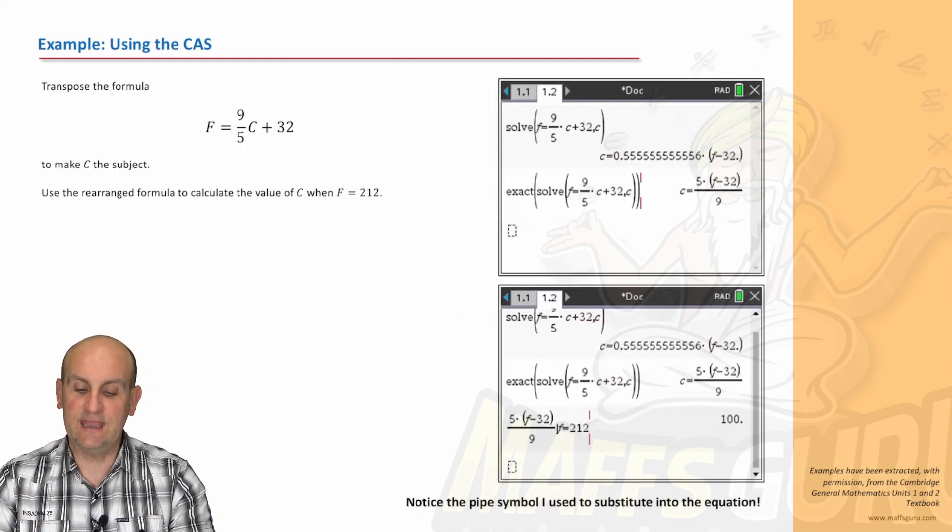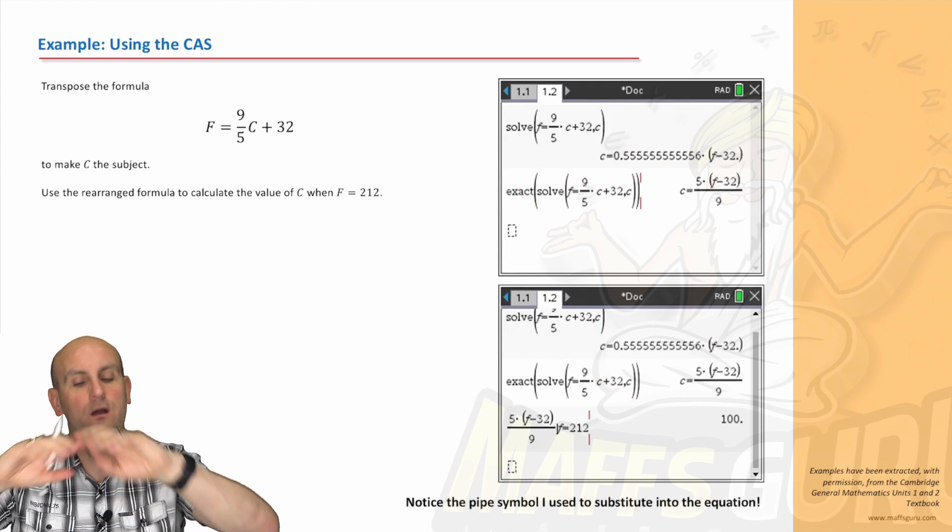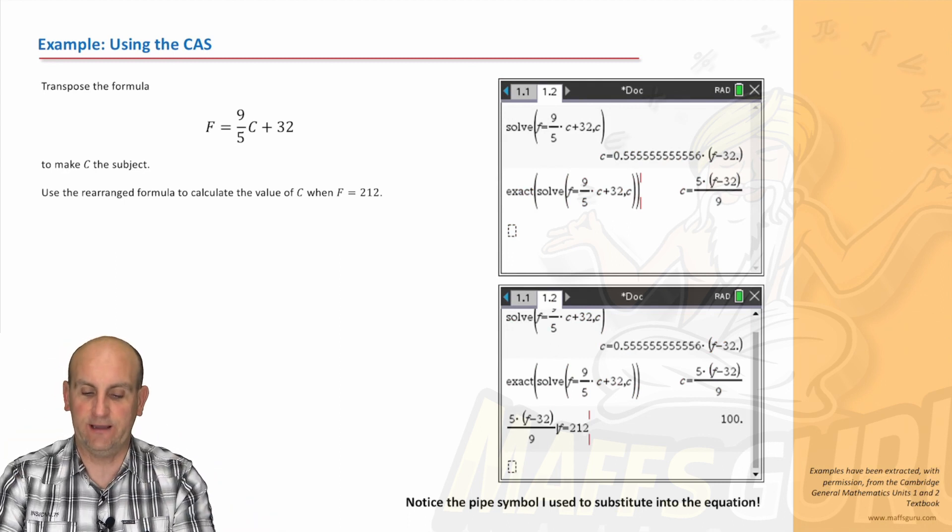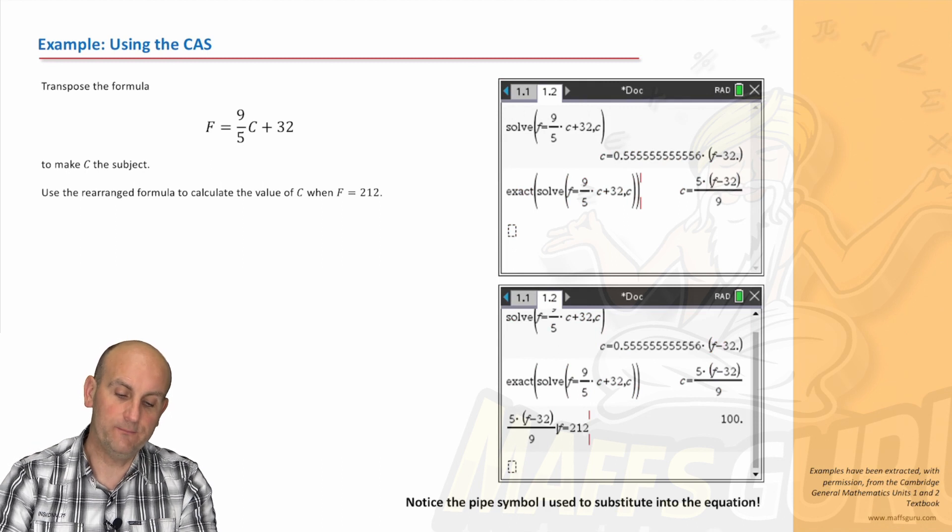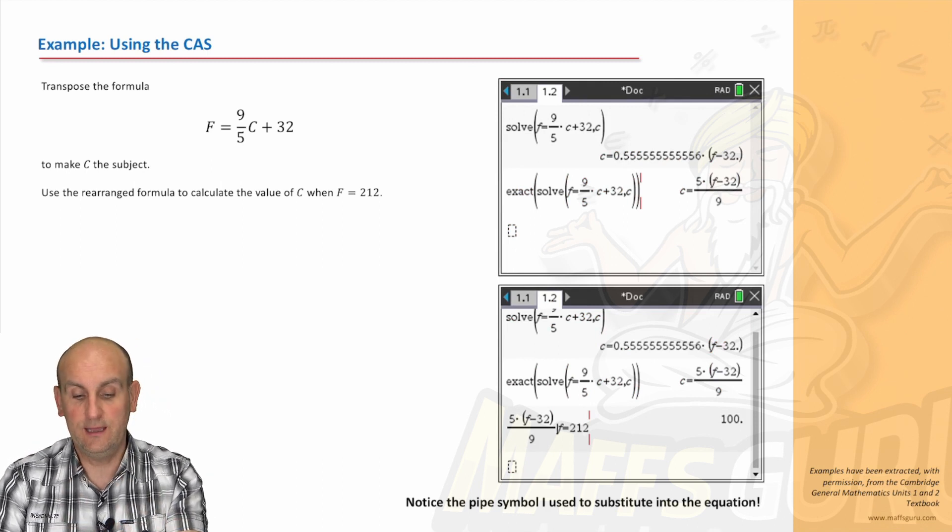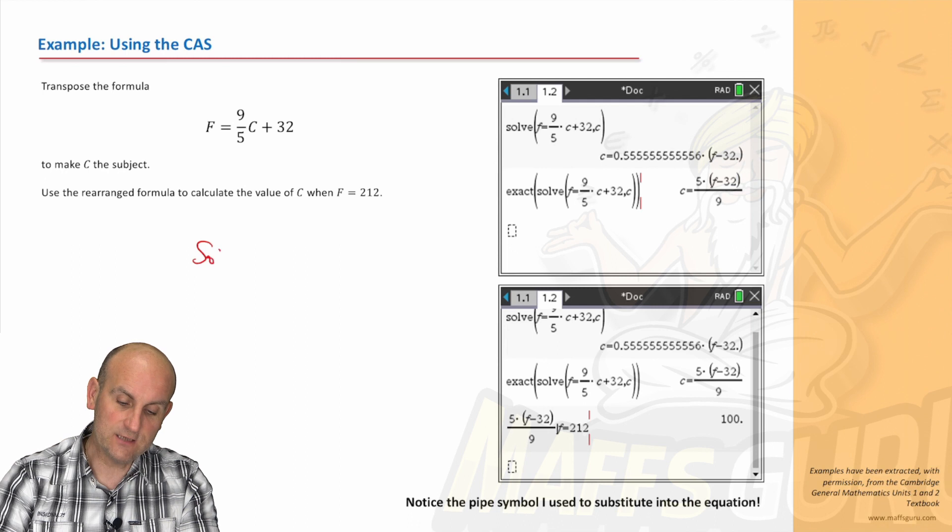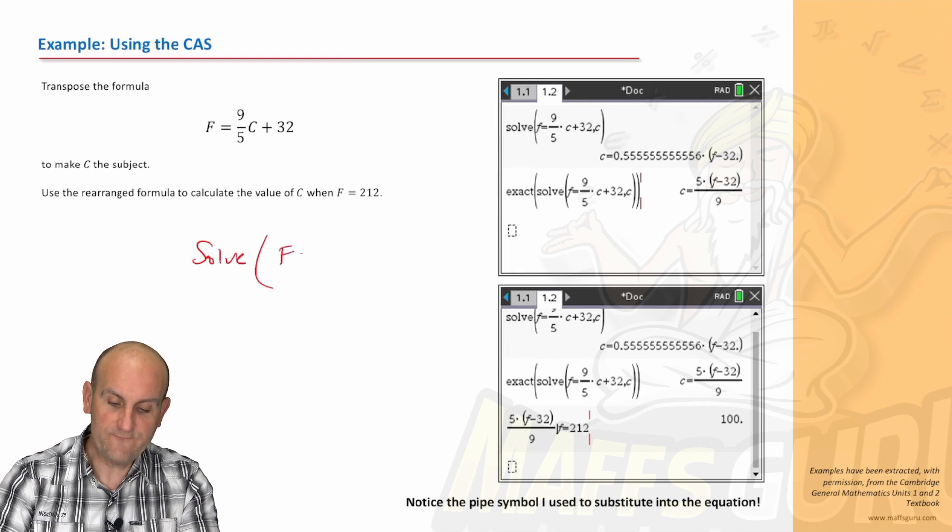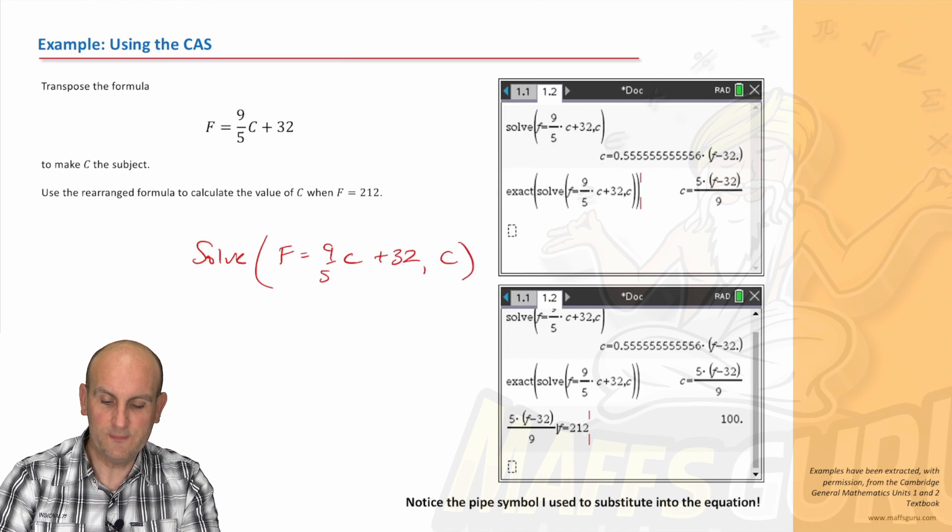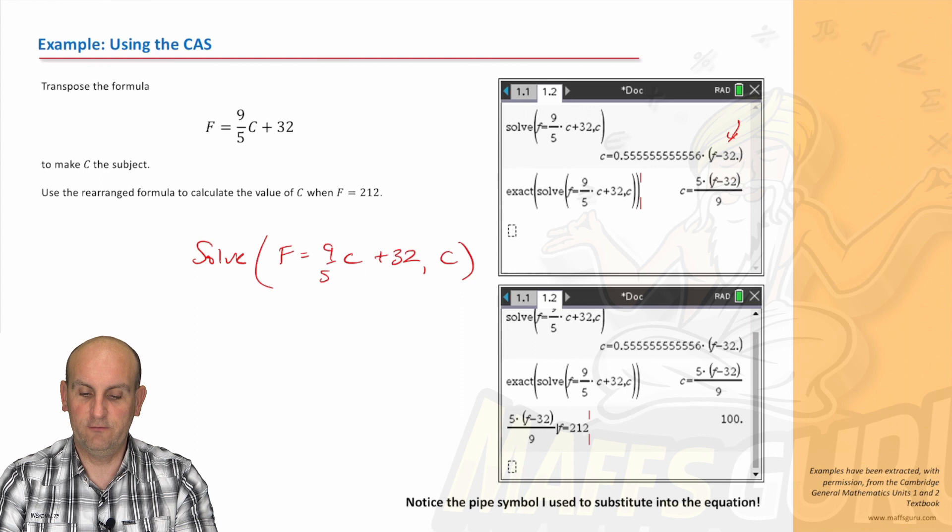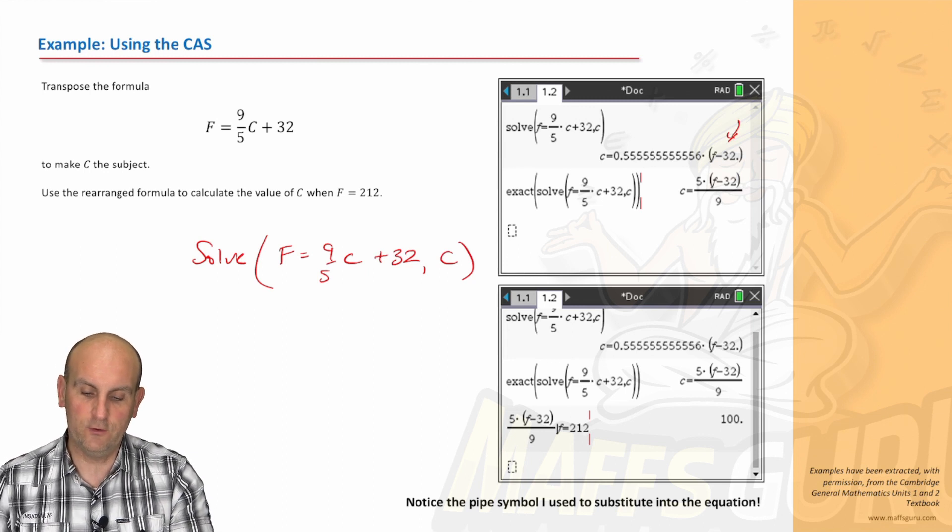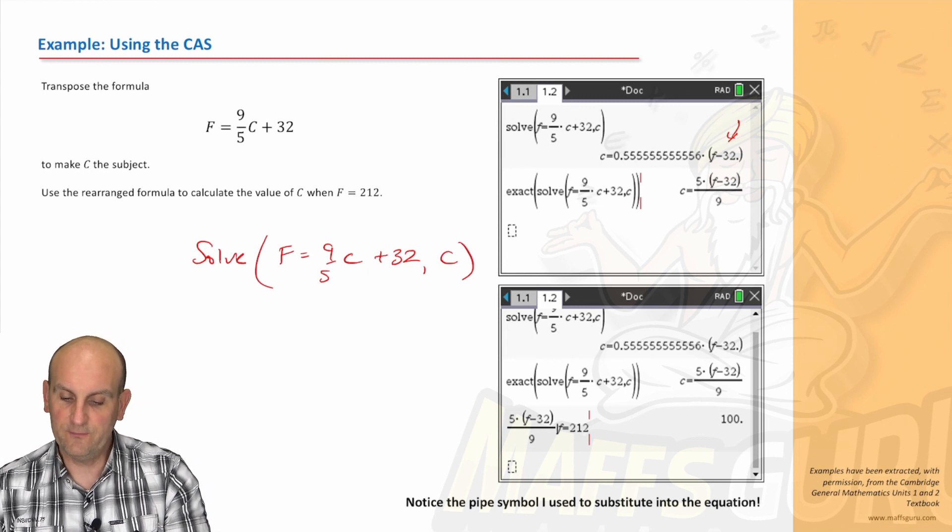Obviously now we can use the CAS. And if you notice again what happens here—well, god, tragedy after tragedy with my calculator. So the first thing I can do is I can say, well alright, because I want C first, yes, I basically said let's solve F equals 9 on 5 C plus 32 comma C. And what do you notice happened? It came out with something that looks really really stupid: C equals 0.555555 times F minus 32.